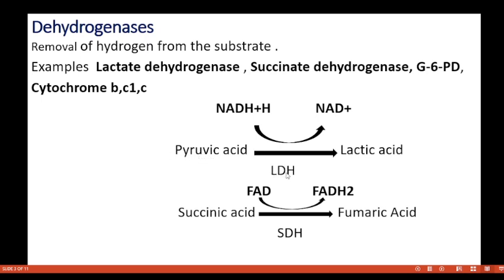Lactate dehydrogenase converts pyruvic acid to lactic acid; the hydrogen acceptor here is NAD (nicotinamide adenine dinucleotide). Succinate acid is converted to fumaric acid by succinate dehydrogenase, and the hydrogen acceptor here is FAD, flavin adenine dinucleotide.